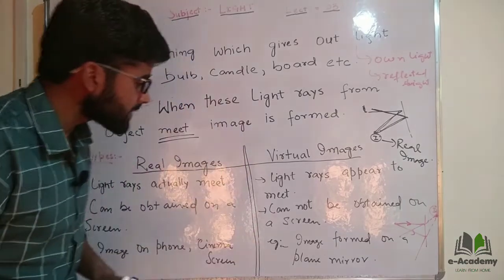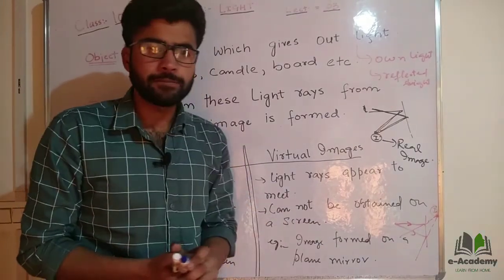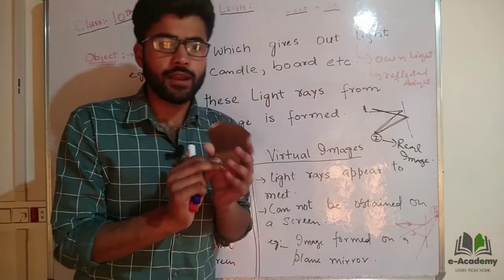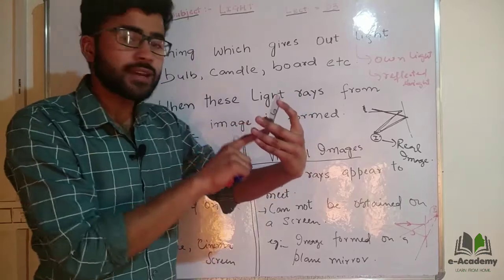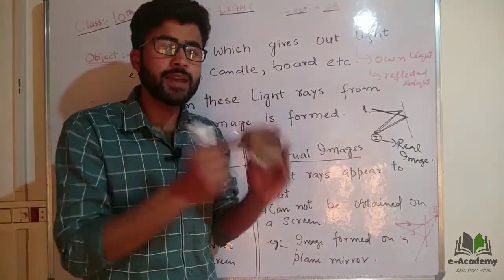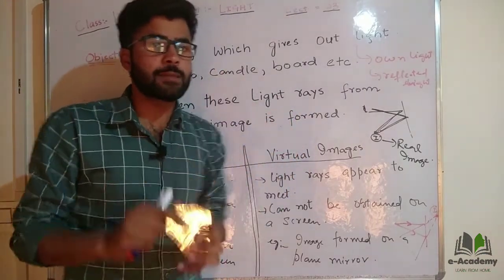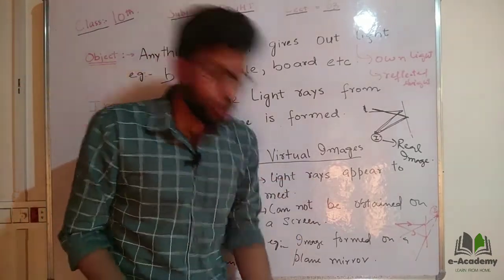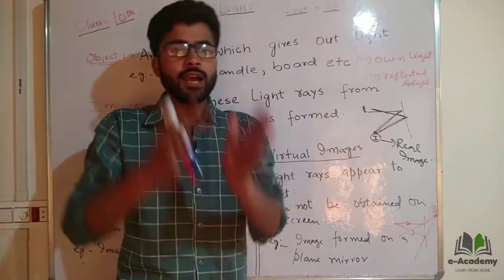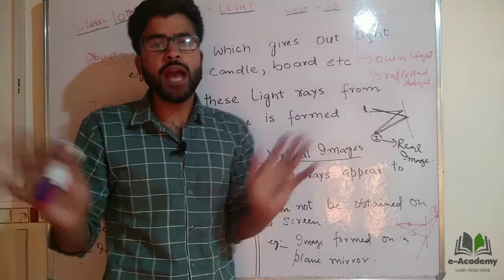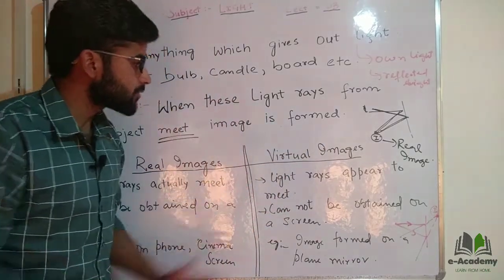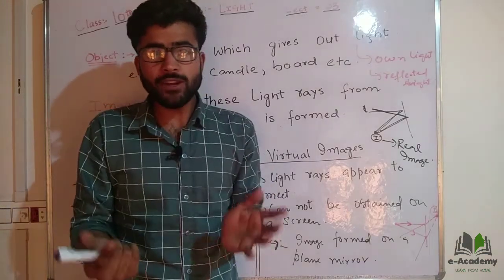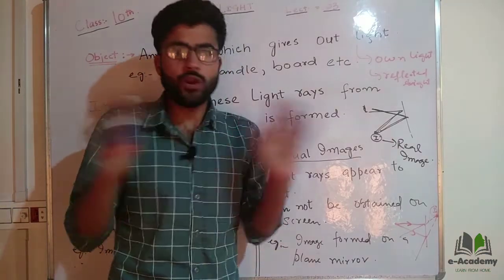A virtual image is basically one which cannot be obtained on the screen. For example, we have an image on a mirror. It will remain as long as the object is in front of it. When the object is removed, the image will also be removed. So this is the concept of real image and virtual image. Real image is basically which can be obtained on the screen, and virtual image is which cannot.